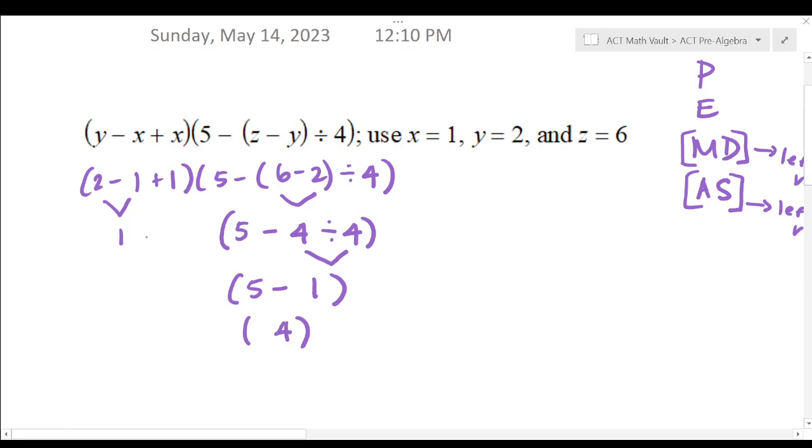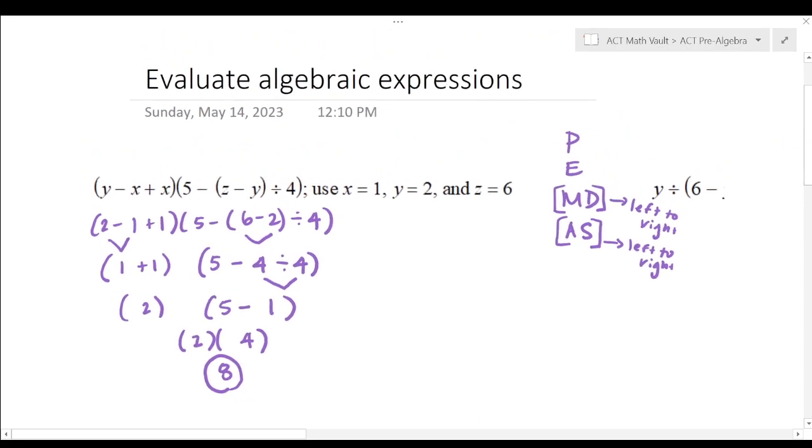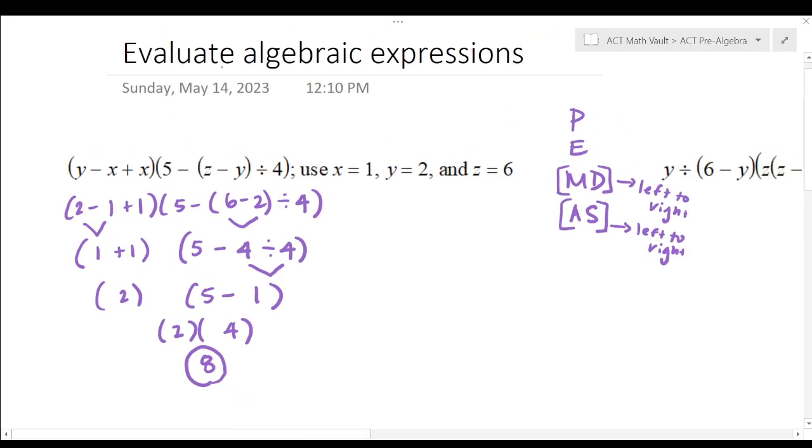So subtraction is going before addition. That's fine. I'm going to do one, and then bring the plus one down. This is two. So we've got two times four. Final answer is eight. So let's talk about evaluating for a second. Evaluate means to find the value of, and you will be given numbers that you need to sub in for variables.